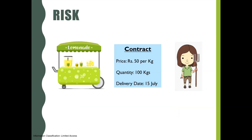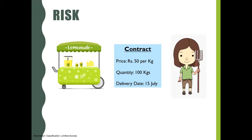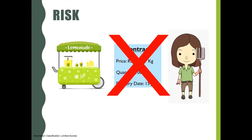Here, there is a risk of either party defaulting on the agreed terms due to various reasons. This is called counterparty risk and it is high in the forwards contract. The traders getting into a forward contract are exposed to counterparty risk due to the large size and unregulated nature of the contract.